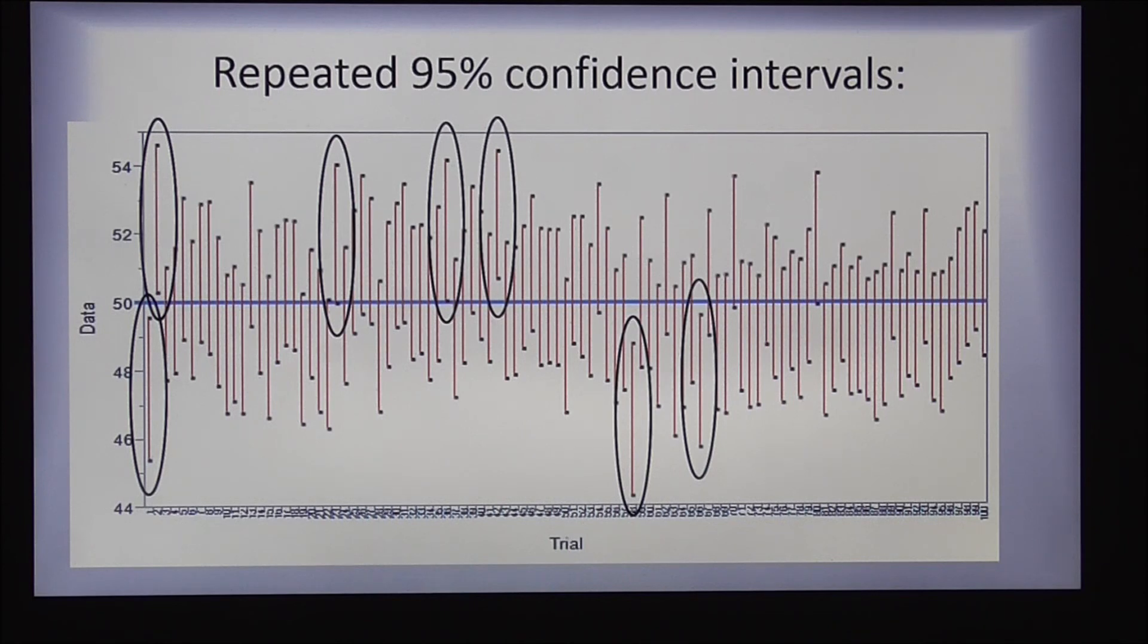Now, again, this is a totally cooked example because I created the population already. And I knew the mean was at 50 because that was the way I set it up. But this is just here to illustrate the principle.